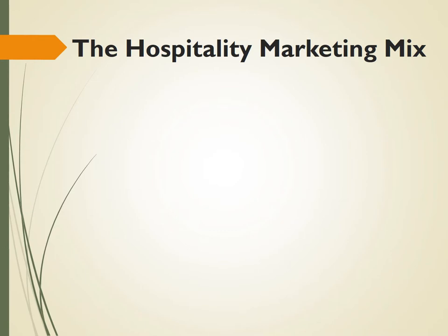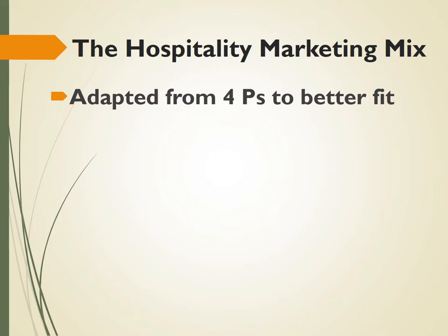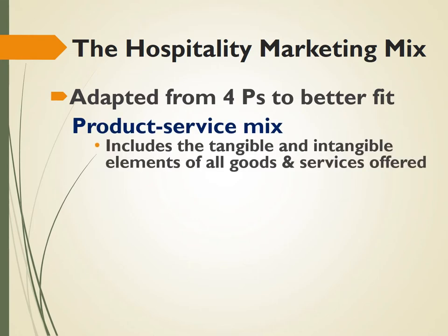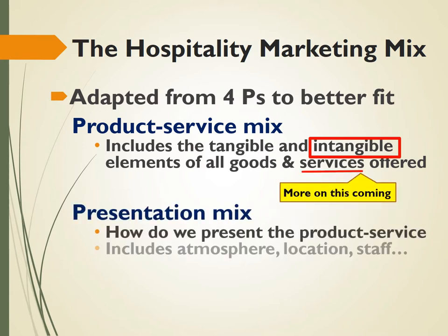Thus far, we've been focusing on the four Ps of the marketing concept. But now we're going to switch to the hospitality marketing mix, which more closely aligns with how marketing is done for the hospitality and tourism industry. There are five elements of this particular mix. The first and most important is the product-service mix — what we're providing is often a combination of both a physical, tangible product and service, as well as all the intangible elements that go along with it. The presentation mix relates to taking intangible elements, like the atmosphere of a restaurant or the service of staff in a hotel, and making that part of how we present our service-product mix to clients.